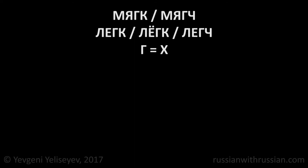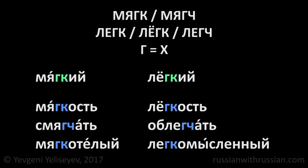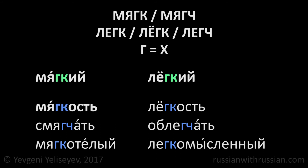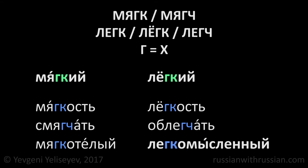Besides that, in roots containing Мягк or Мягч and Легк or Легч, the letter Г is pronounced as Х. When the sound К is soft, the letter Г specifies a soft sound Х. Мягкий, легкий. Although some Russians pronounce a hard sound Х here: мягкий, легкий. But before the hard К and before Ч, the letter Г always specifies a hard sound Х. Мягкость, смягчать, мягкотелый. Легкость, облегчать, легкомысленный.